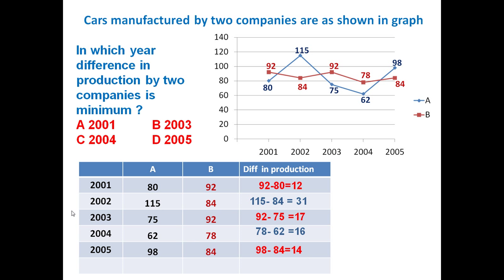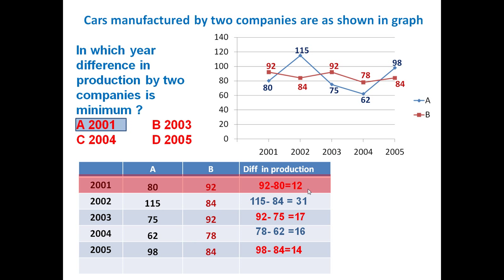The difference in the last year is 14. So in which year is the difference minimum? Clearly it is 2001, with a difference of 12. So the answer is 2001 — in 2001, the difference in production between the two companies is minimum. Using the same graph we can answer more questions.